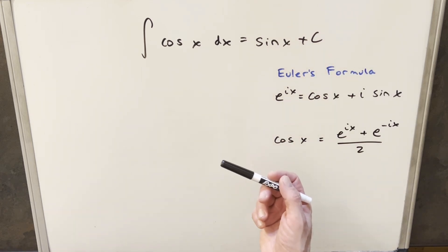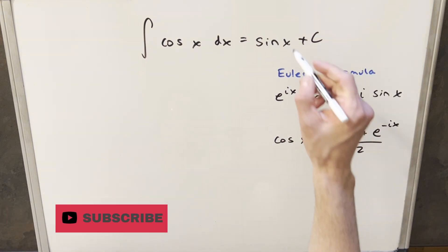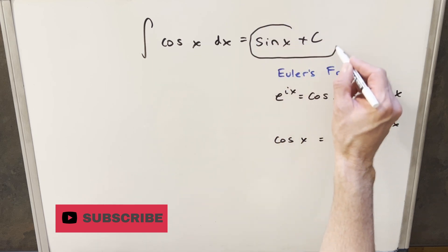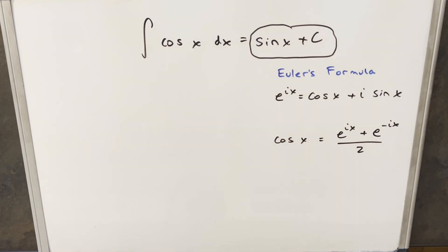So my goal in doing this when we do the complex method for this, we want to get back this same solution that we know sine x plus c. Now I'm going to do this two different ways. The first way is going to be more straightforward and easy to explain.